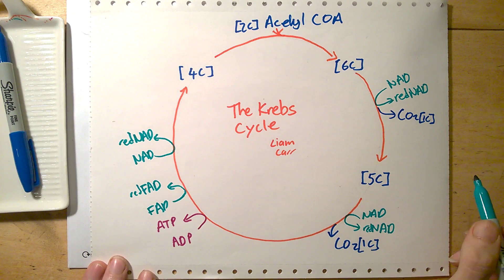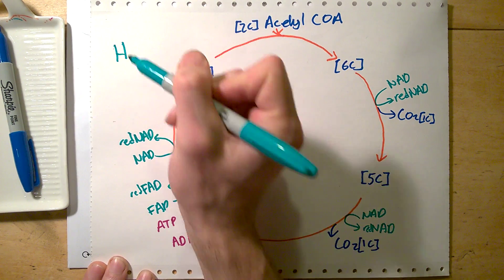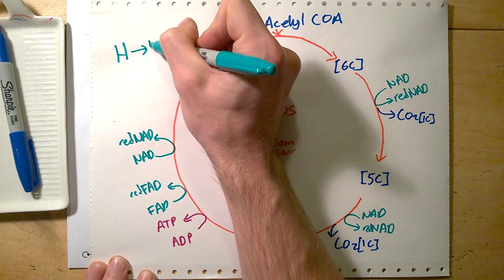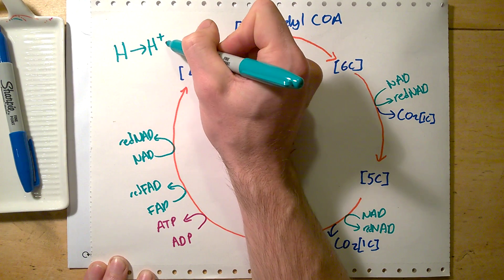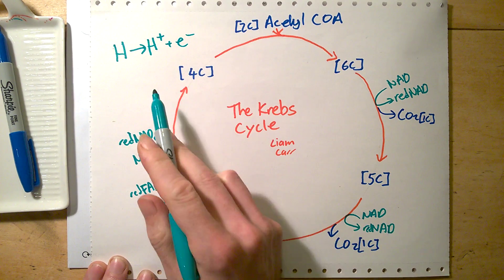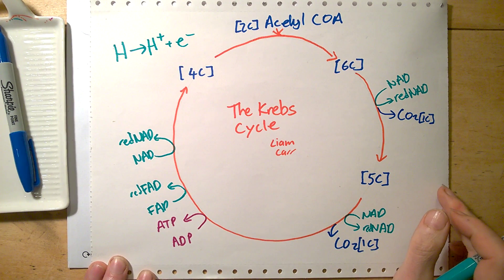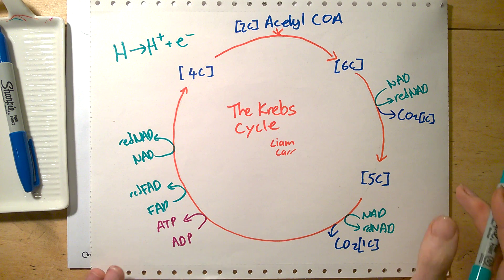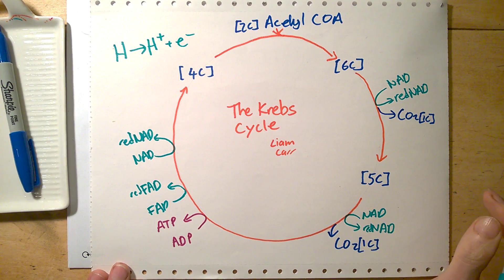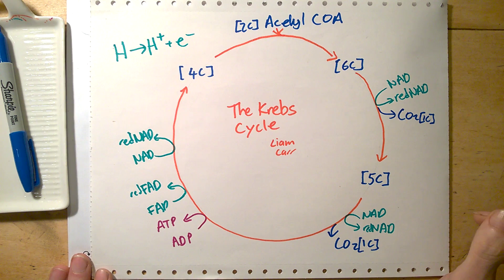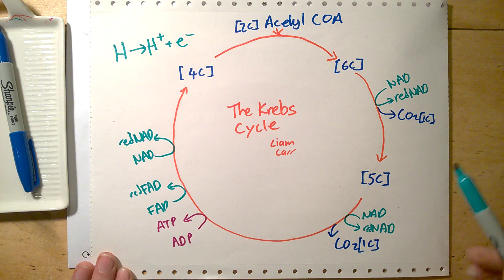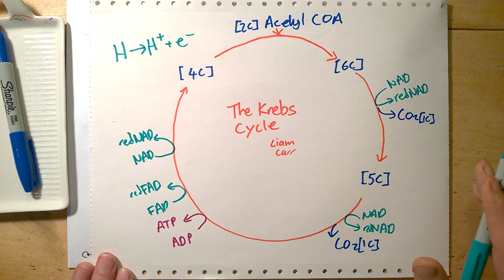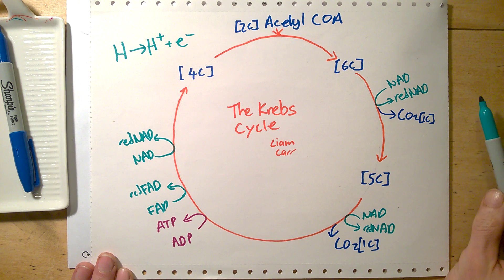The point of reduced NAD is that hydrogen can be split into a proton and an electron. The protons are used in chemiosmosis to generate ATP, and the electrons are used in the electron transport chain. So the Krebs cycle is absolutely vital in keeping respiration going and generating ATP in the next stage. Reduced NAD is the point of the Krebs cycle. Thanks for watching.